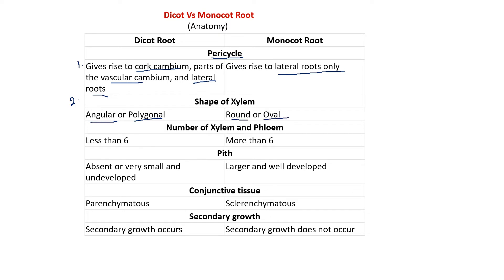The number of vascular bundles — xylem and phloem bundles — is less than 6 in the case of dicot root, and generally it is 4 in number. In most cases, you will see 4 xylem bundles and 4 phloem bundles, which is known as the tetrarch condition. In the case of monocots, it is more than 6, which is known as the polyarch condition. This is the third difference.